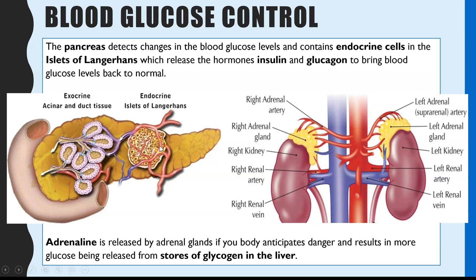These cells are also the effectors — the glands which release two different hormones, insulin and glucagon, to bring about changes to return your blood glucose levels to normal. There is actually a third hormone involved that you don't learn about at GCSE, and that is adrenaline. Adrenaline is released by the adrenal glands, shown here in yellow above the two kidneys, and we'll be looking at its role.